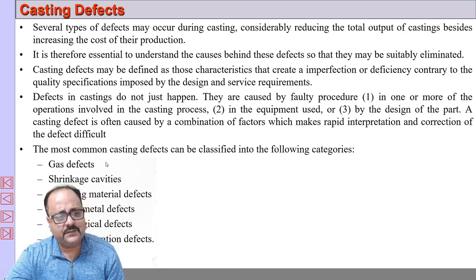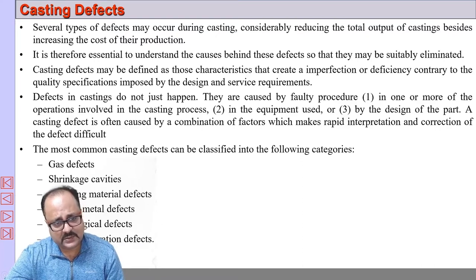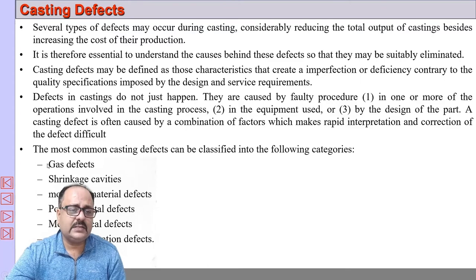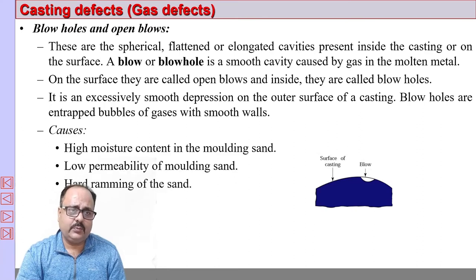Defects can be classified as: gas defects, sinkage cavities, mold material defects, pouring material defects, metallurgical defects, and mold preparation defects. All defects fall under one of these categories. Let us start with gas defects. One of the most common types of gas defects is blow holes or open blows.